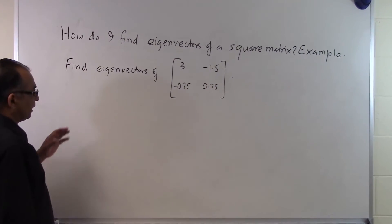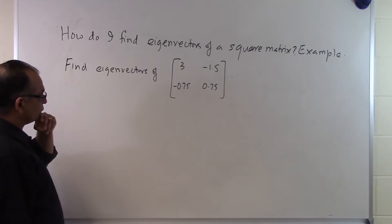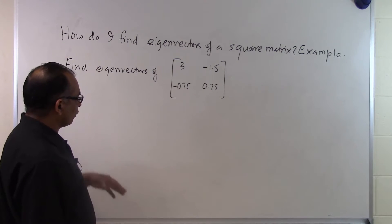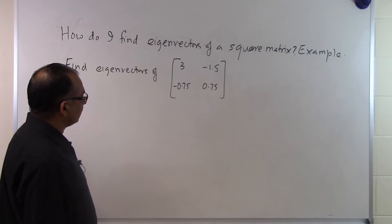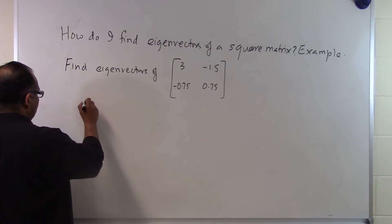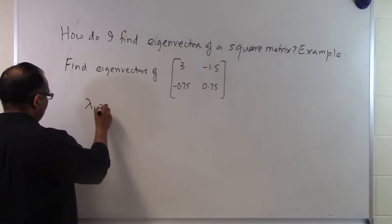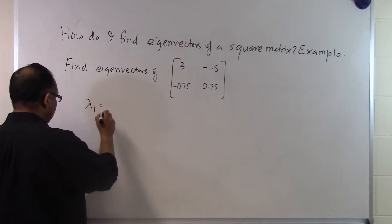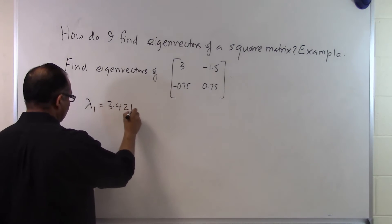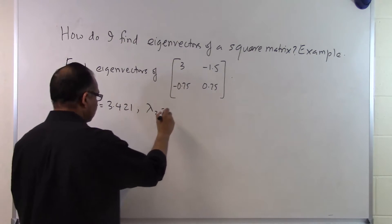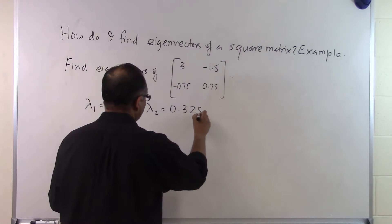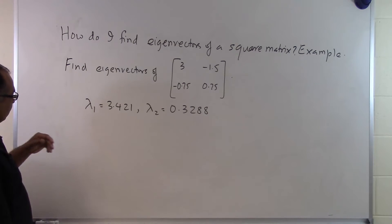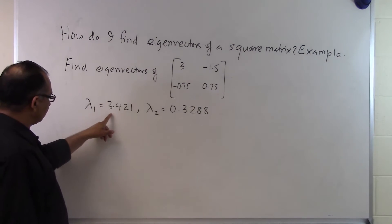The first thing we have to understand is that eigenvectors correspond to eigenvalues. This particular 2 by 2 matrix is going to have two eigenvalues, and corresponding to each eigenvalue we will have an eigenvector. In the previous segment, we already found that the two eigenvalues corresponding to this square matrix are 3.421 and 0.3288. Let's see how we can find the eigenvector corresponding to each eigenvalue.